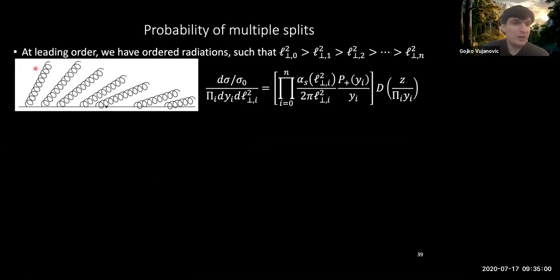So if you are in the case where you have these ordered splittings, where you start from very highly virtual guy, which is also emitted at large angles, and then subsequent splitting gets lower virtuality and so on and so forth, you would have this shower of continuously decreasing virtualities and continuously decreasing angles.